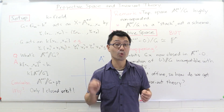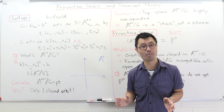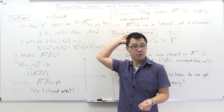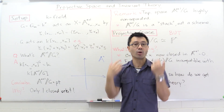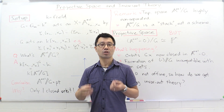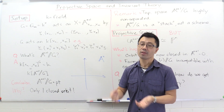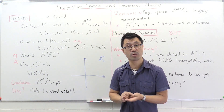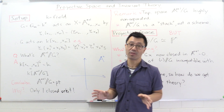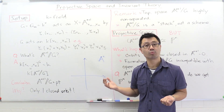Hi, I'm Daniel Chan from UNSW Sydney. Welcome to another adventure in pure mathematics. Today I want to talk about projective space from the point of view of invariant theory. This example will illustrate both the problem of non-closed orbits that we saw before, but also hints at Mumford's method for constructing group quotients in the quasi-projective case.